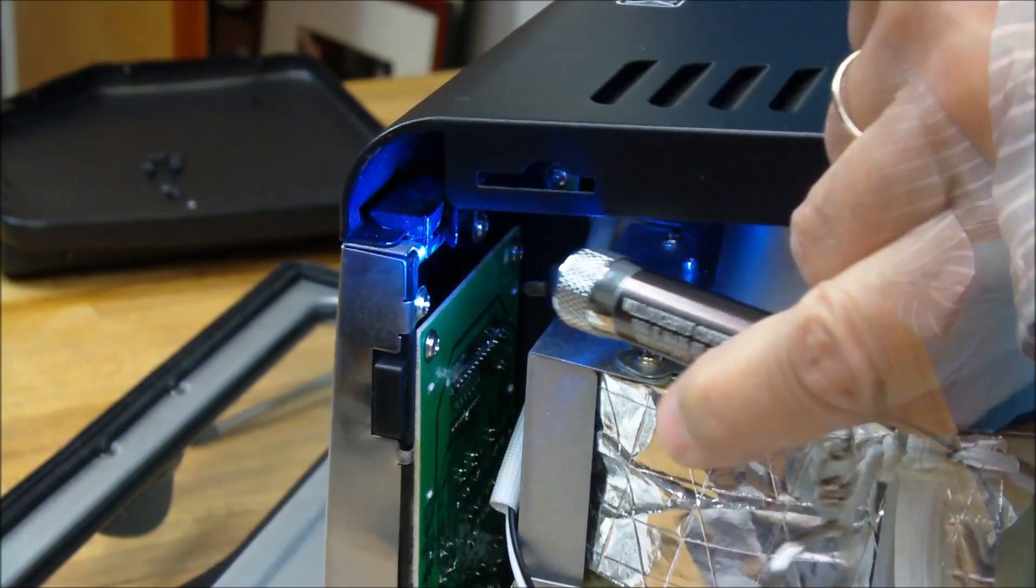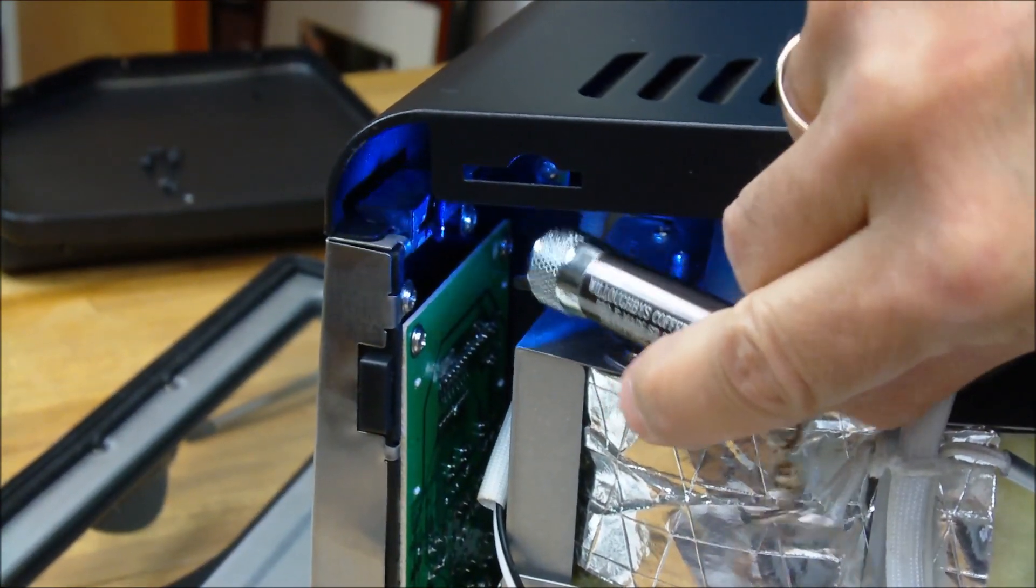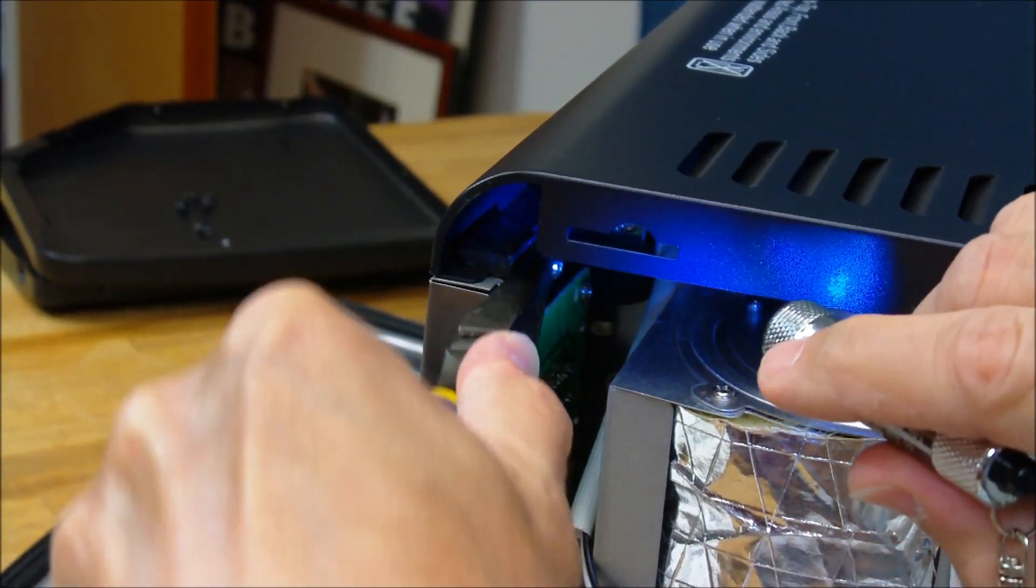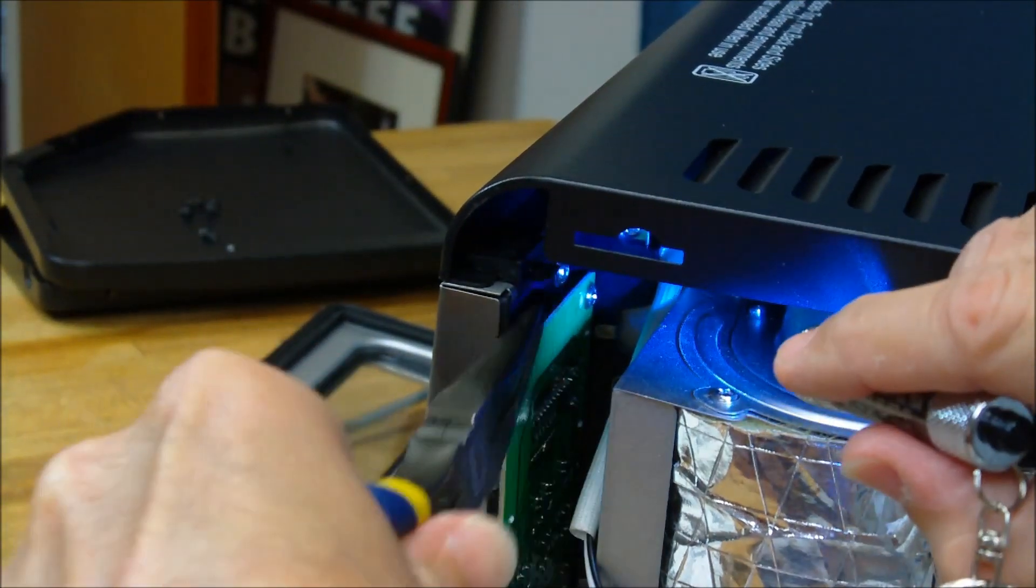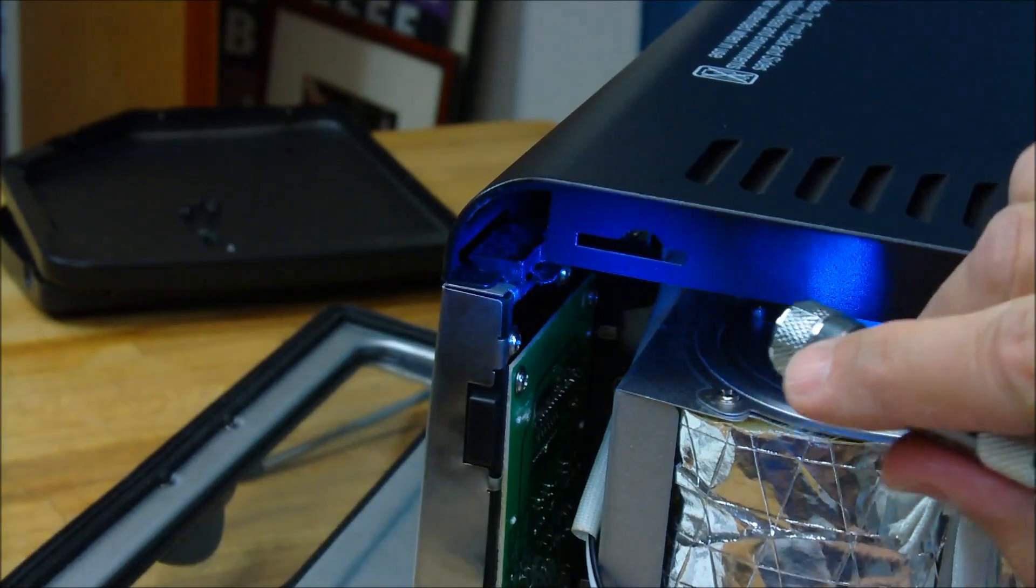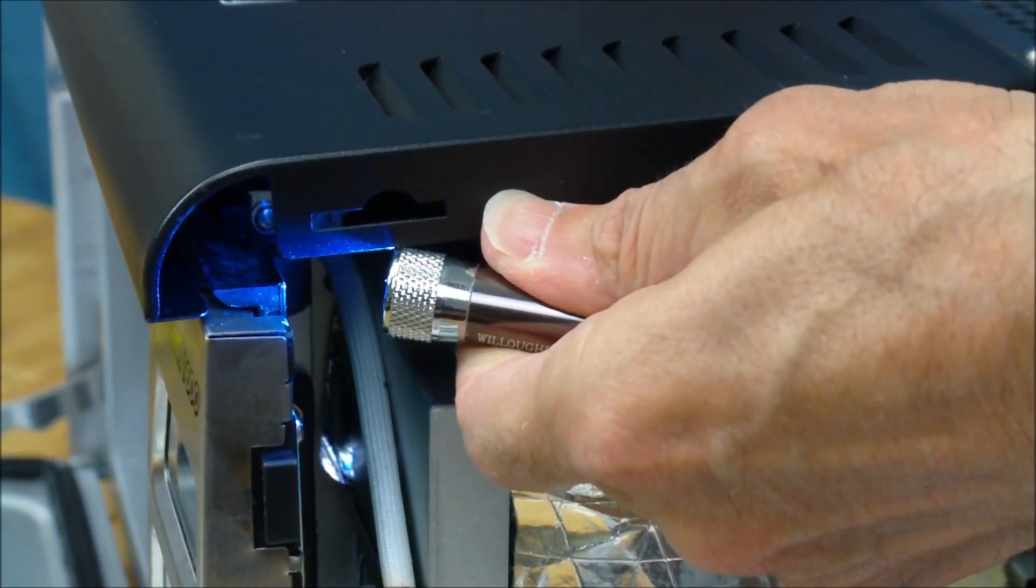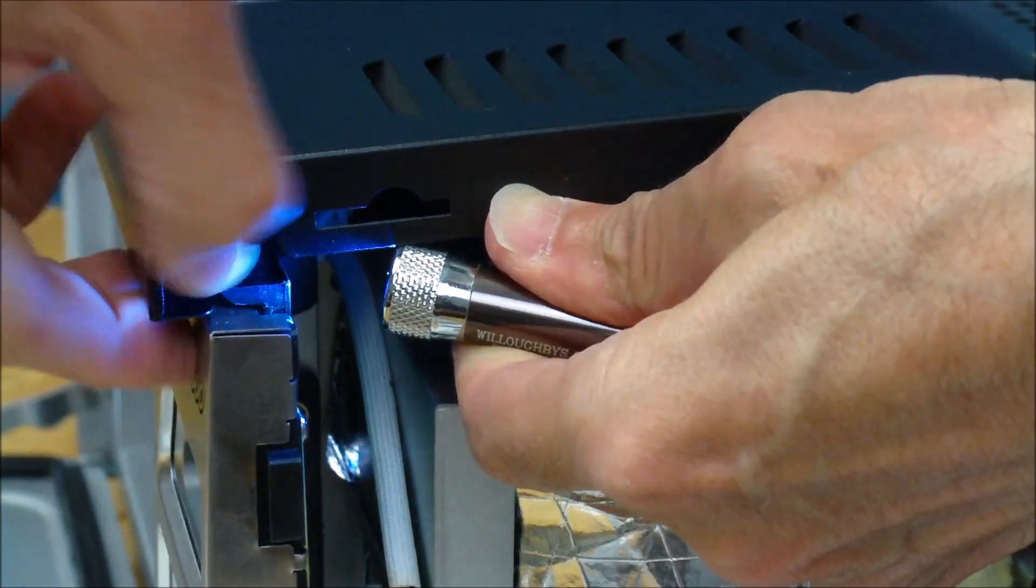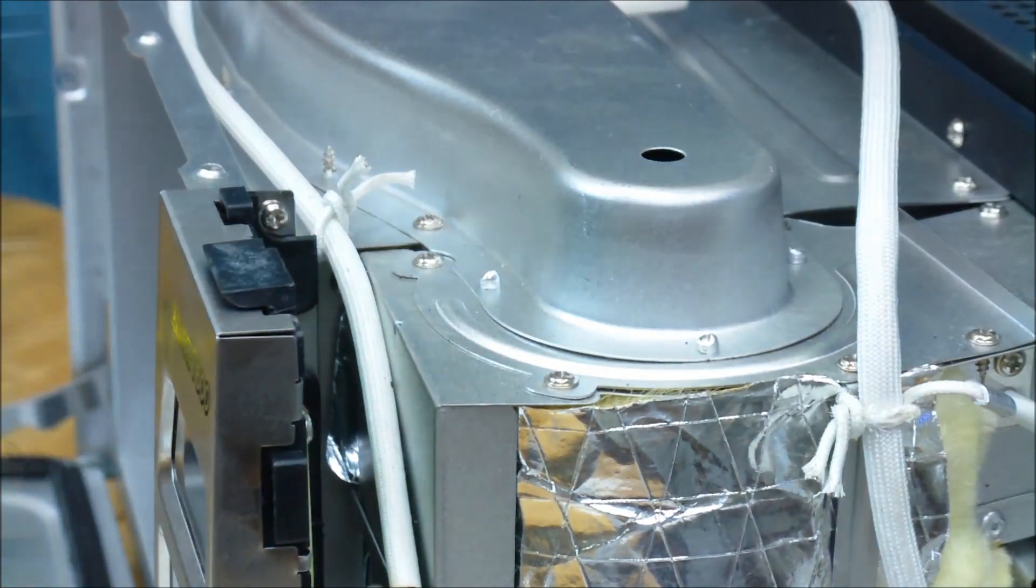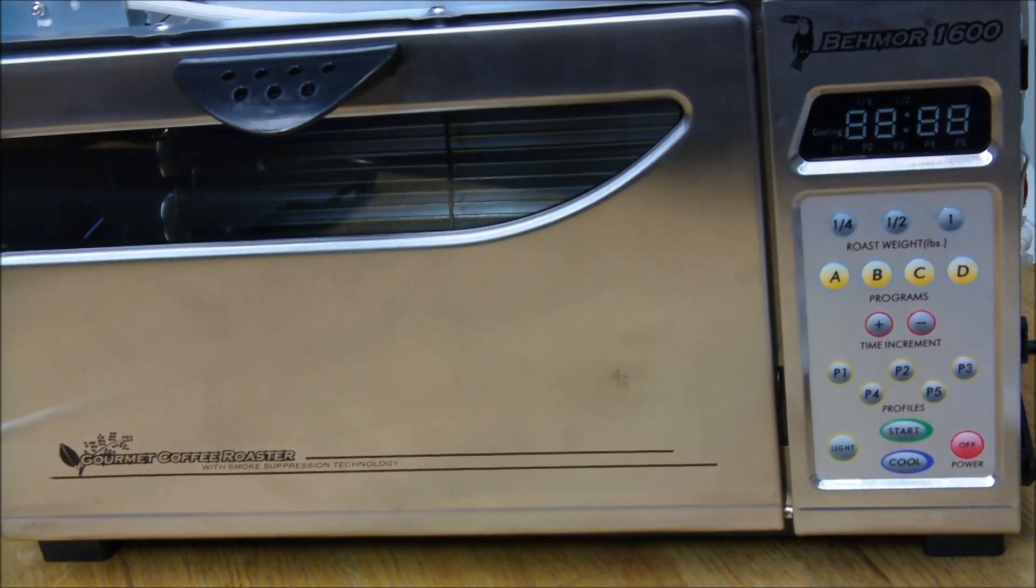So in order to remove the top, you have to straighten out this little pin here so that it can slide through the slot. Once it's all straight, little retaining arm is straight, you can just pull it through and then the top is free. So make a note of this gap.